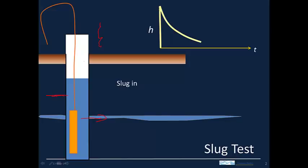As the head drops, it approaches the head in the aquifer, so the rate at which it drops decreases because the head gradient is getting smaller. It continues to drop and eventually approaches the initial head. Once you reach static conditions, there are no longer any changes. That's the slug-in test, because we've put the cylinder into the well.